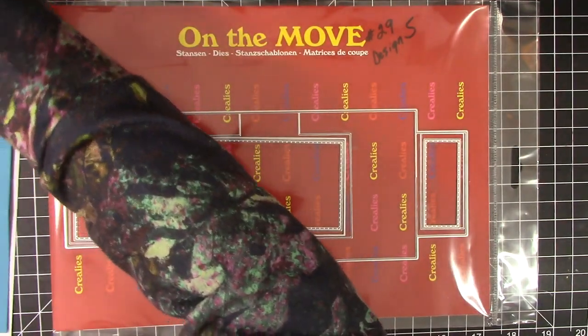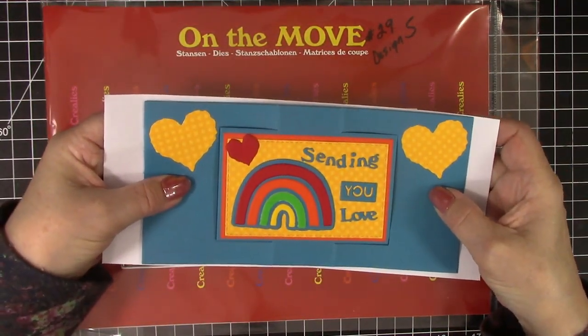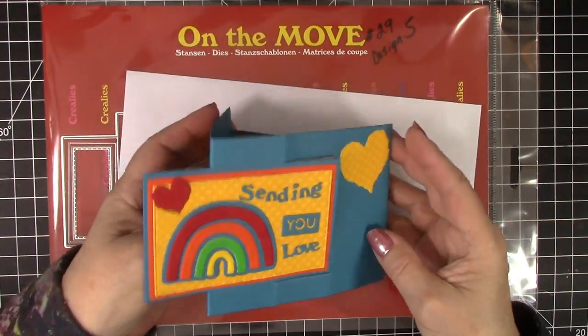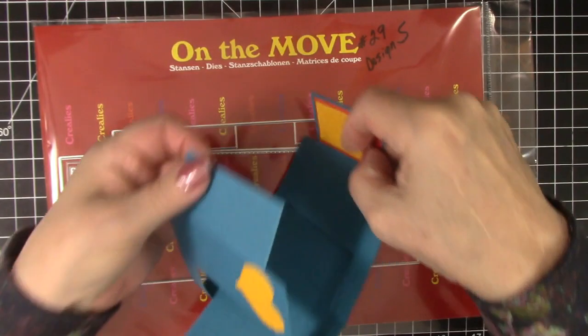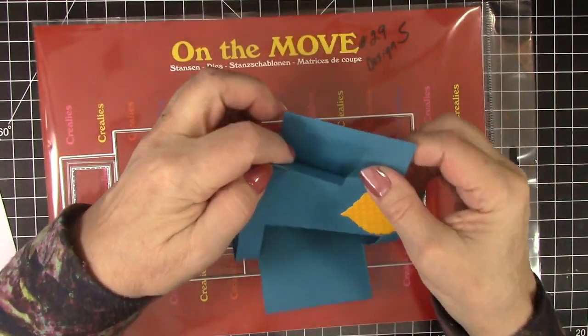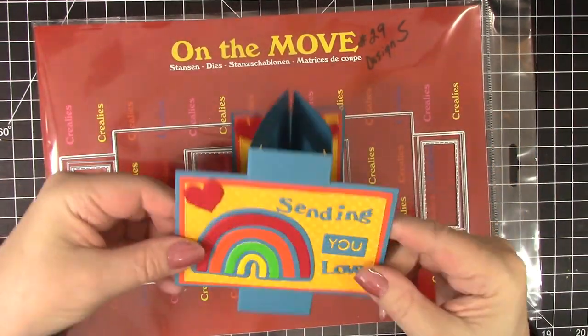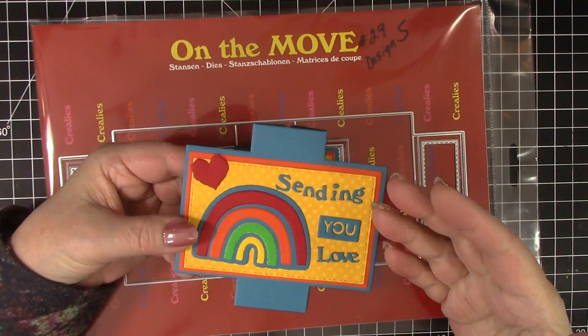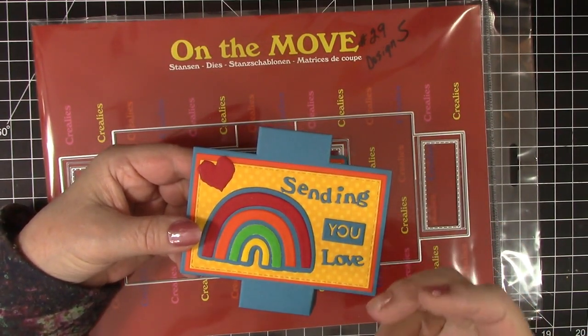When you mail it, you can mail it in a legal size envelope or a slimline envelope. And then when they get it in the mail, let them know that they should put these slots together. And then it will stand up with lots of cheer. I made this Sending You Love card for a friend who is under the weather.